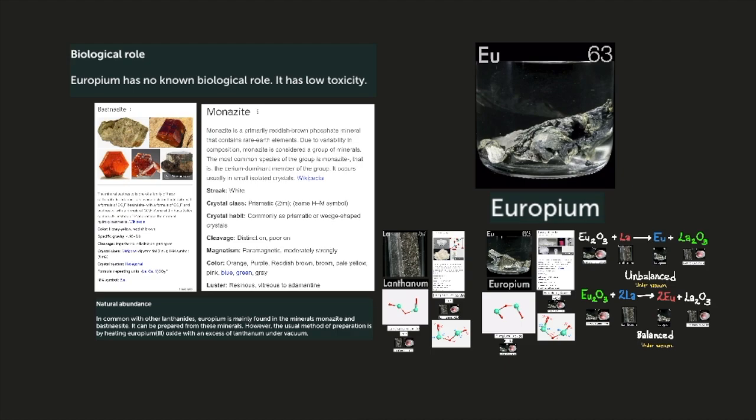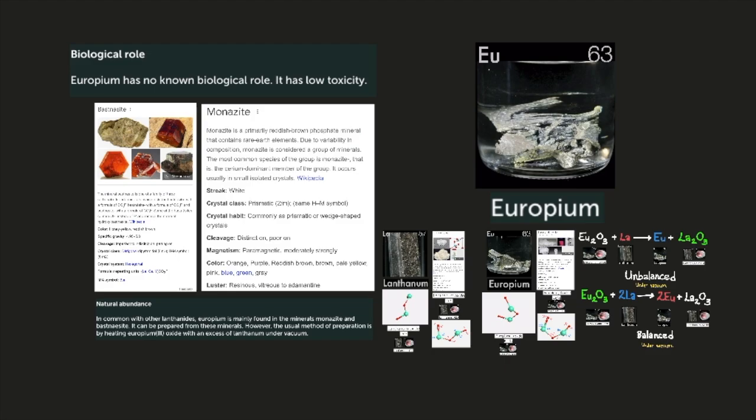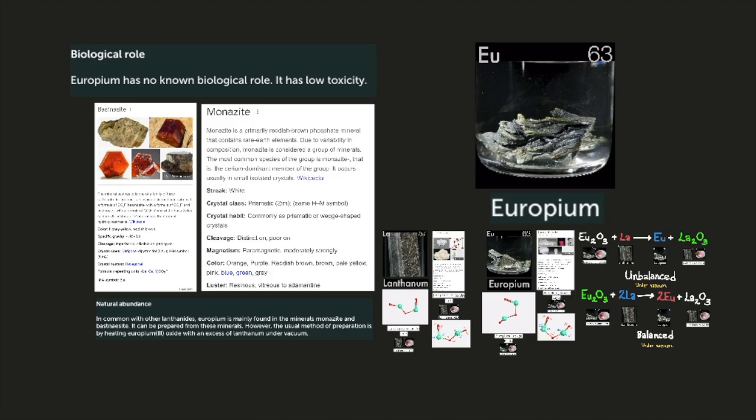Biological role. Europium has no known biological role. It has low toxicity. Natural abundance. In common with other lanthanides, europium is mainly found in the minerals monazite and bastnäsite.